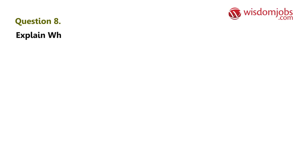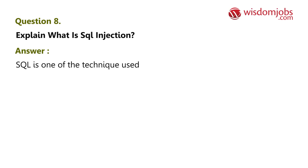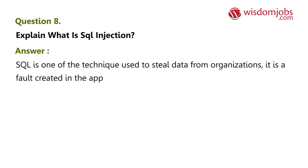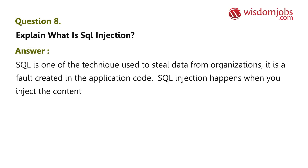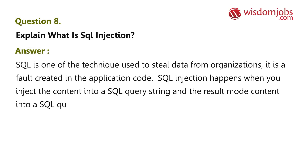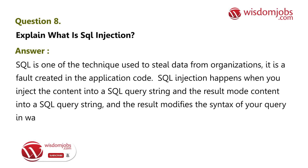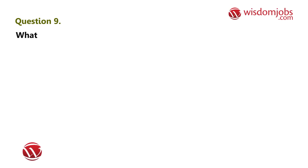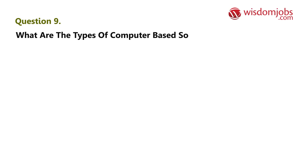Question 8: Explain what is SQL injection. Answer: SQL injection is one of the techniques used to steal data from organizations. It is a fault created in the application code. SQL injection happens when you inject content into a SQL query string and the result modifies the syntax of your query in ways you did not intend.